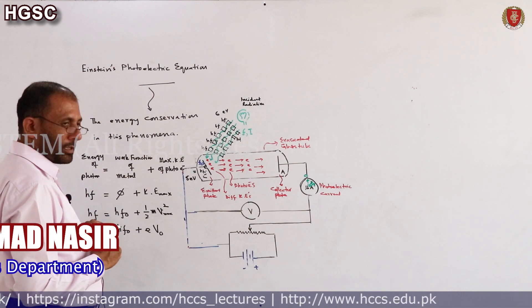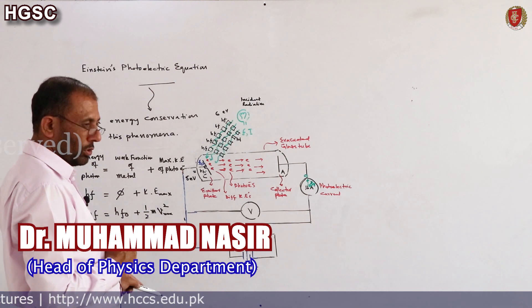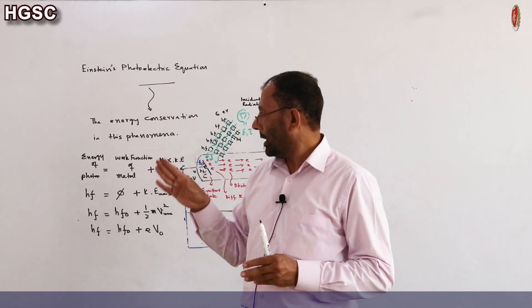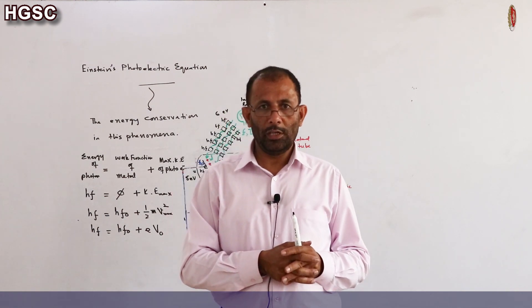Here is the threshold frequency, this total is the work function of metal, and this is the energy of the photon. These equations are the different forms of Einstein's photoelectric equation and these equations are actually the energy conservation during this phenomenon.